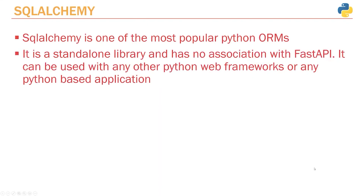There are a couple of different ORMs, but the most popular one within the Python world is SQLAlchemy. One thing to keep in mind is that this is a standalone library — it has nothing to do with FastAPI. We're going to use it in our FastAPI application, but it has no relationship with FastAPI; it's not part of FastAPI, it's its own library. You can use SQLAlchemy with any web development framework, or any Python application, even if it's not a web application. In the next video, we'll start looking at how to work with SQLAlchemy and how to set up a database connection using SQLAlchemy instead of using the default Postgres driver.